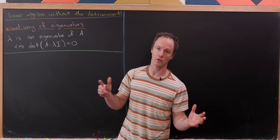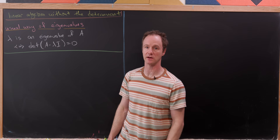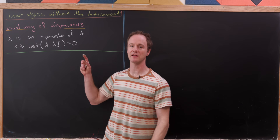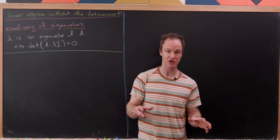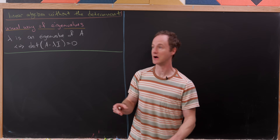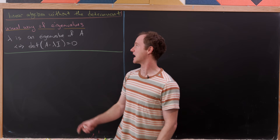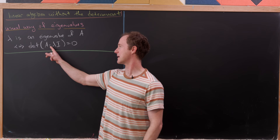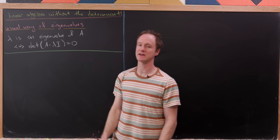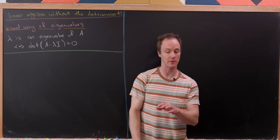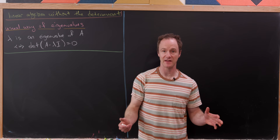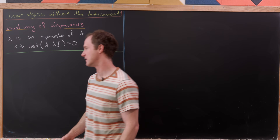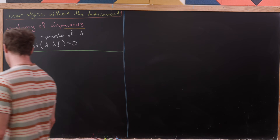Before we get started, let's recall that normally in a linear algebra class, you would immediately learn after the definition of an eigenvalue that lambda is an eigenvalue of A if and only if the determinant of A minus lambda times the identity is zero. As I said, that uses the determinant, which we're trying to get away from in this video.